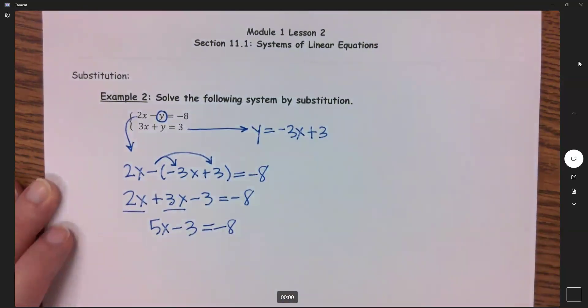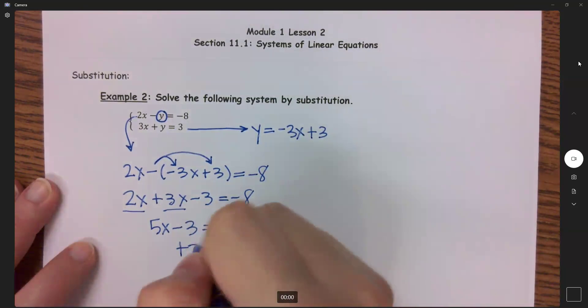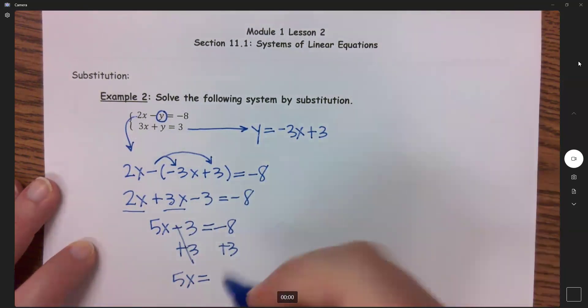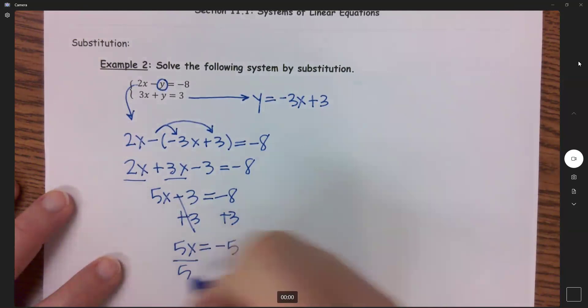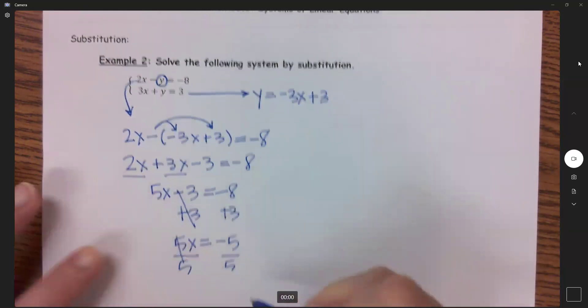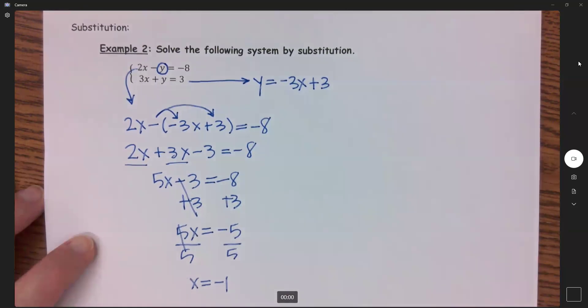And now we have a two-step equation. We're going to add our 3 over and I get 5x equals negative 5, and then lastly divide by 5. So we get x equals negative 1.